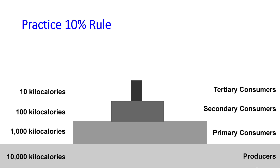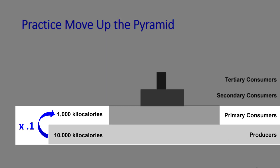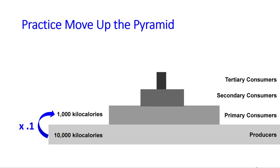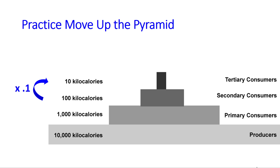Let's practice some math. At the very bottom level we have our producers — the plants. If we multiply by 10%, we get 1,000. In your calculator, you just times it by .1. So 10,000 times .1 would be 1,000 — I drop a zero. To go up the next level, I just do it again. I multiply by 10%, or multiply in the calculator by .1. So 1,000 times .1 gives you 100. To go up to the next level, notice I'm just multiplying by 10% each time.